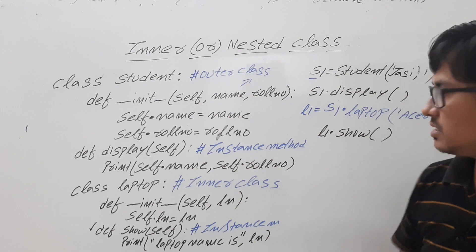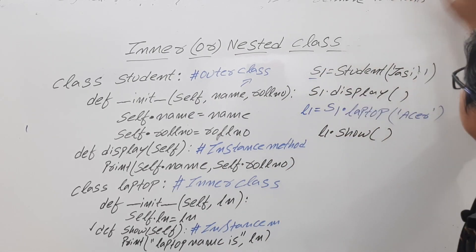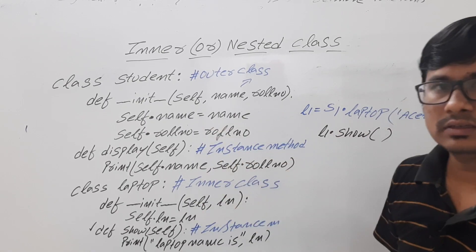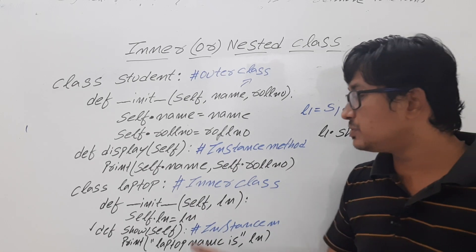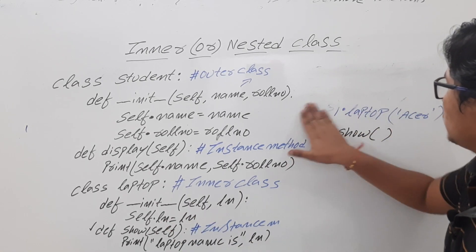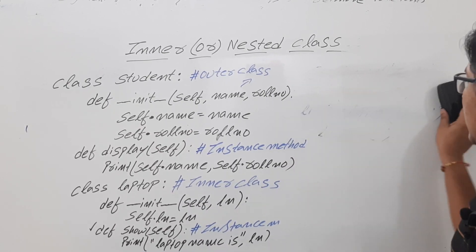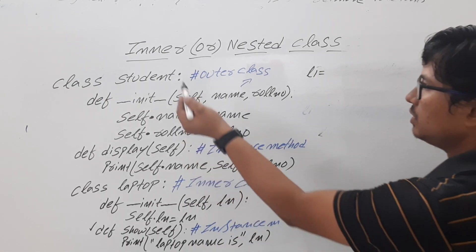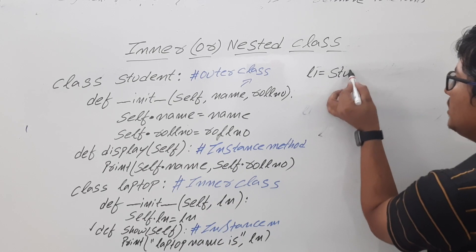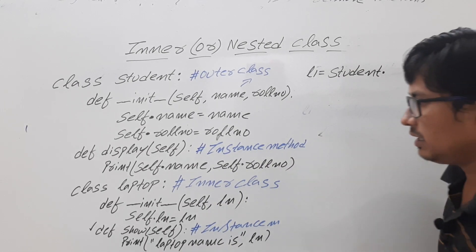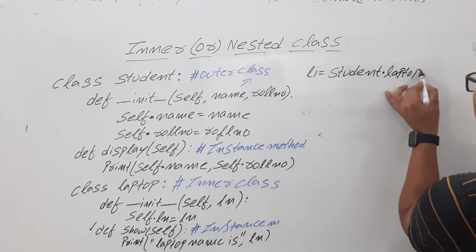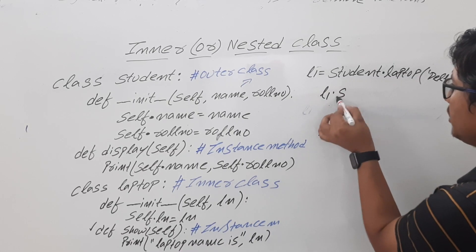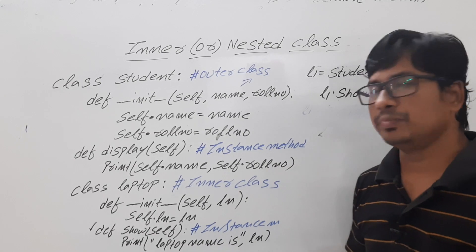Now, what if you have not created any object for the outer class but want to create an object for the inner class directly? Yes, you can do it. You write: l1 equals Student dot Laptop and pass the laptop name — for example 'Dell'. Then calling l1 dot show gives the output: laptop name is Dell. The syntax is outer class name dot inner class name, without needing an outer class object.